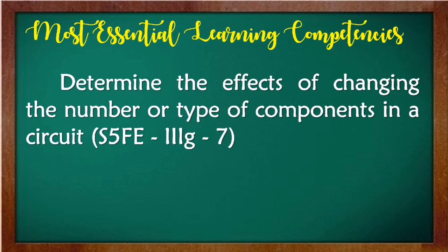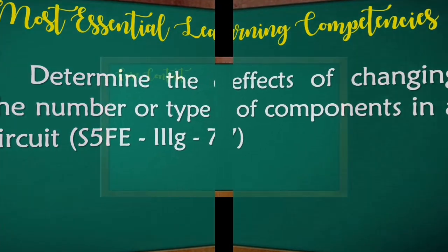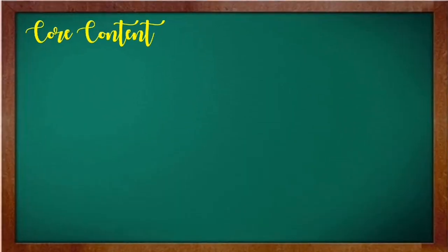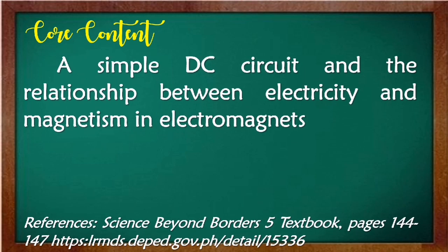Our most essential learning competency is to determine the effects of changing the number or type of components in a circuit. Our core content covers a simple DC circuit and the relationship between electricity and magnetism in electromagnets.